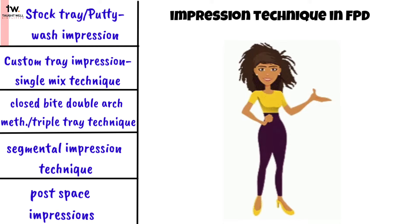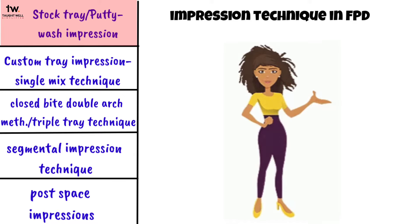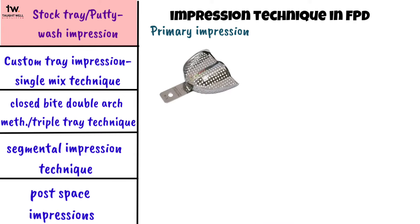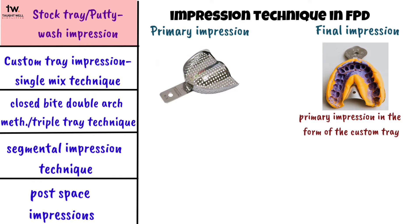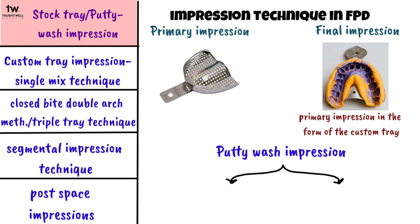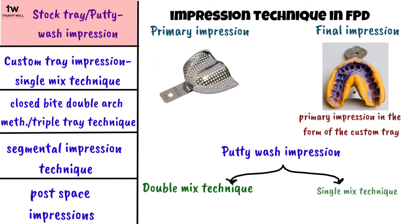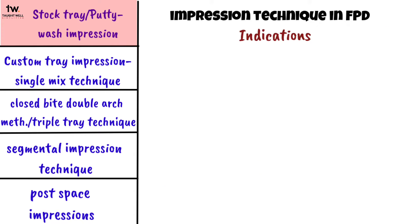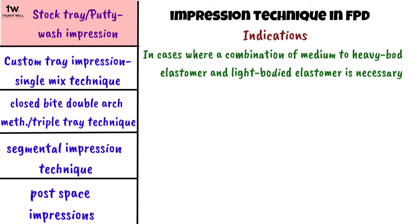Impression making using a stock tray is also known as the putty wash technique. We make a primary impression with a stock tray, and the final impression is made by using the primary impression in the form of the custom tray. There are two methods: a double mix technique and a single mix. This putty wash impression is used in cases where a combination of medium to heavy bodied elastomer and light bodied elastomer is necessary.